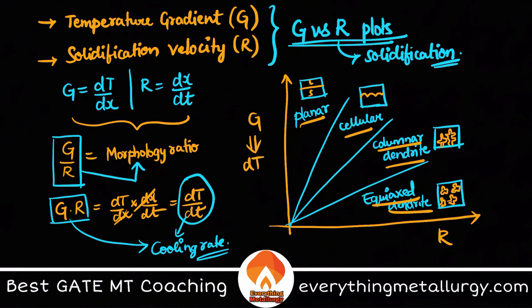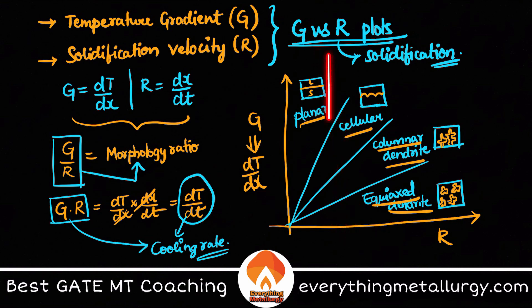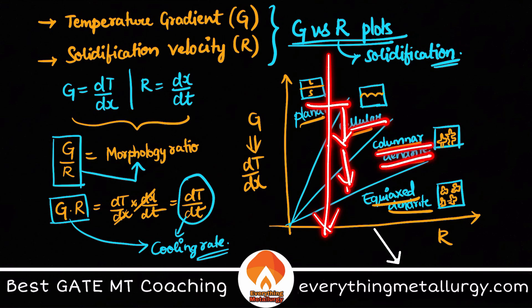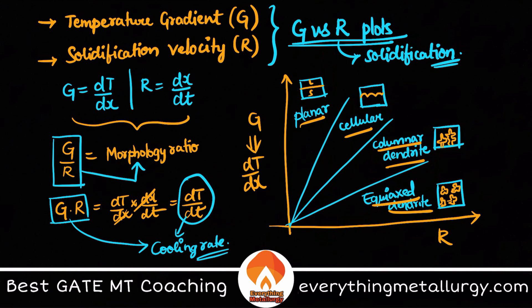As the slope G decreases through curves 2, 3, and 4, we transition from planar to cellular, then columnar dendritic, and finally equiaxed dendritic structures. Higher G gives planar, lower G progressively gives cellular, columnar dendrites, and equiaxed dendrites.